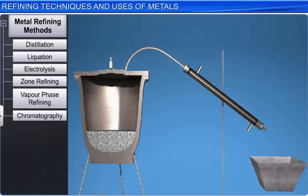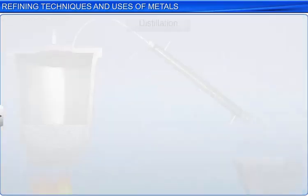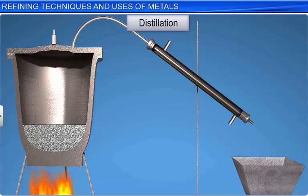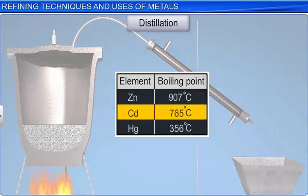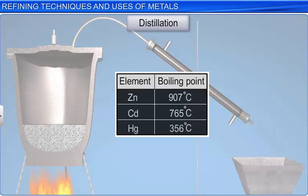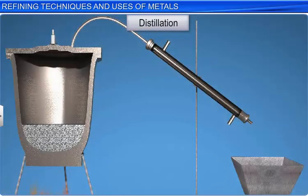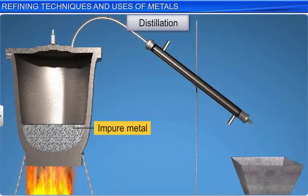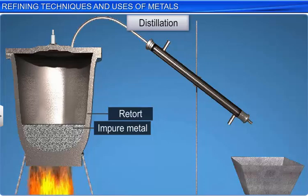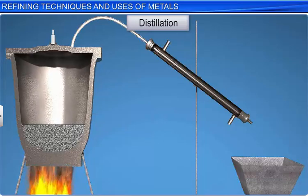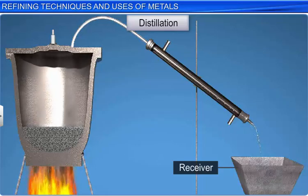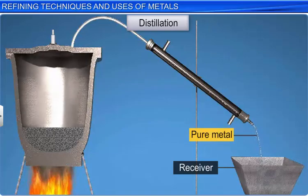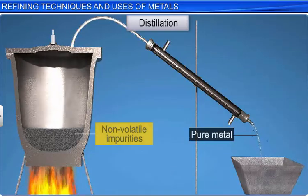First, let us study distillation. This process is used to purify metals with low boiling points, such as zinc, cadmium and mercury. In this method, the impure metal is heated in a retort and its vapors are separately condensed in a receiver. The pure metal distills over, leaving behind the non-volatile impurities in the retort.